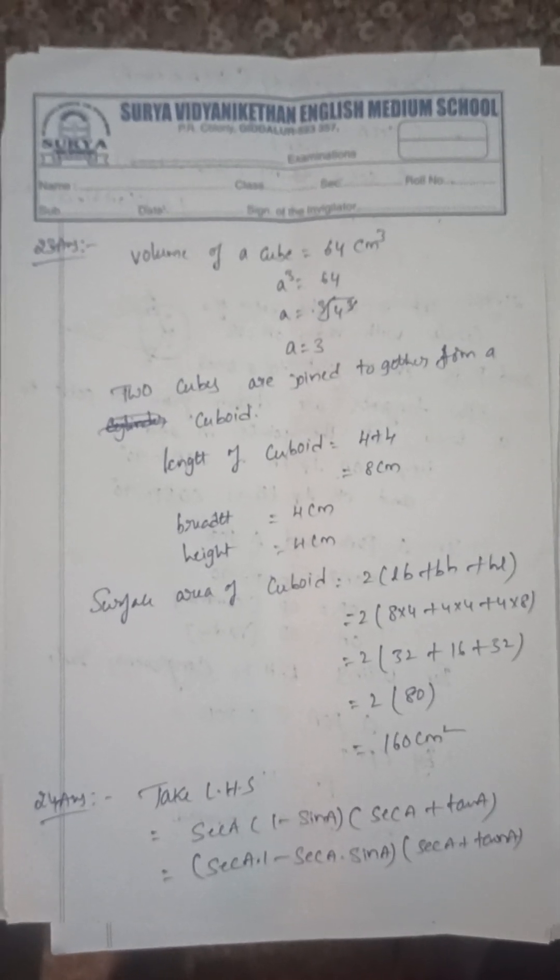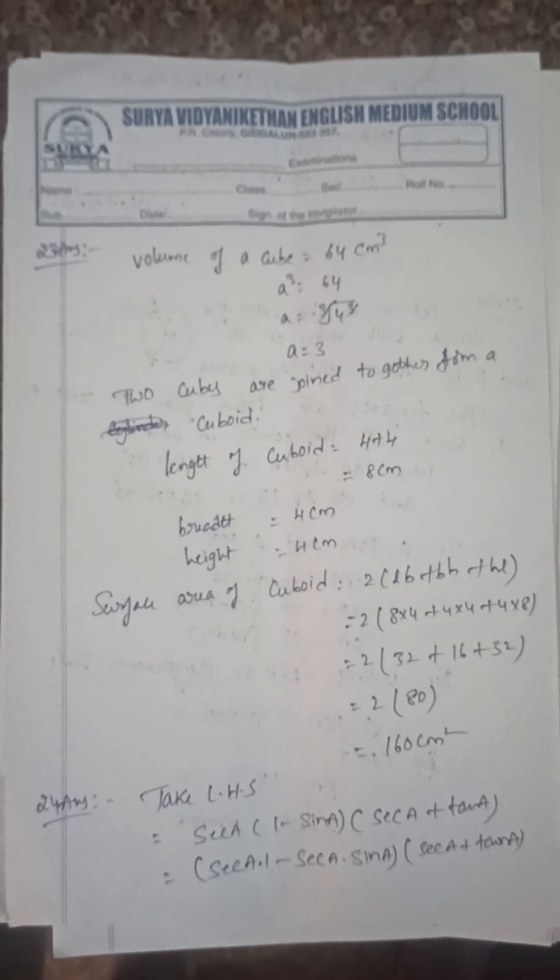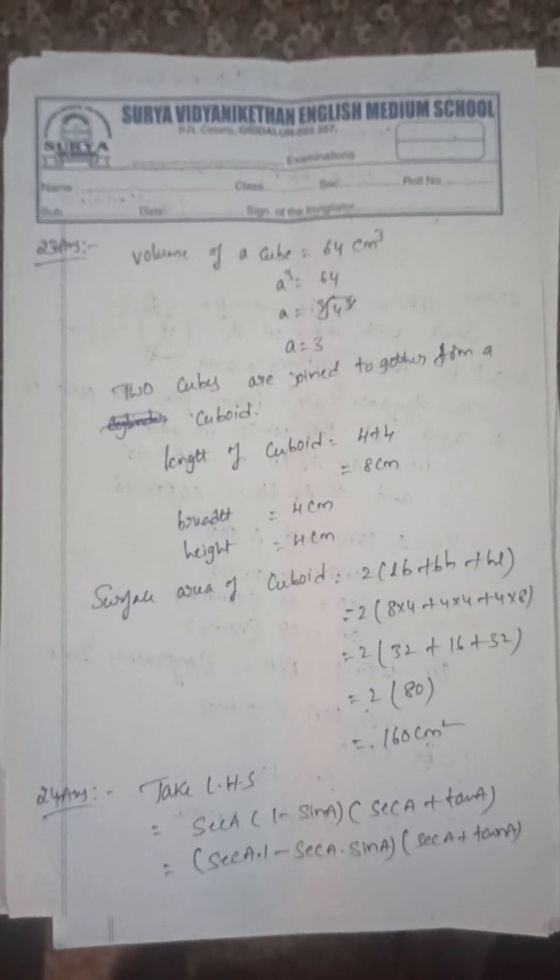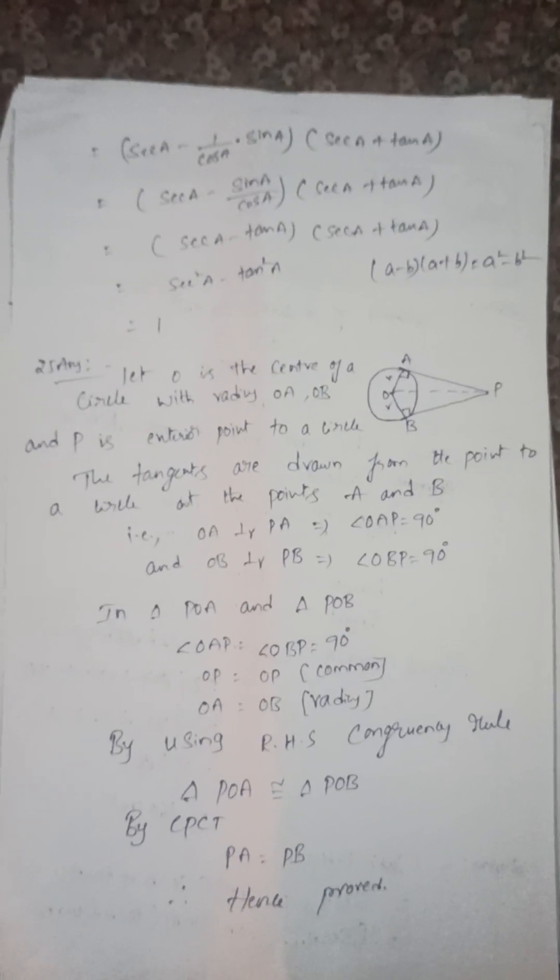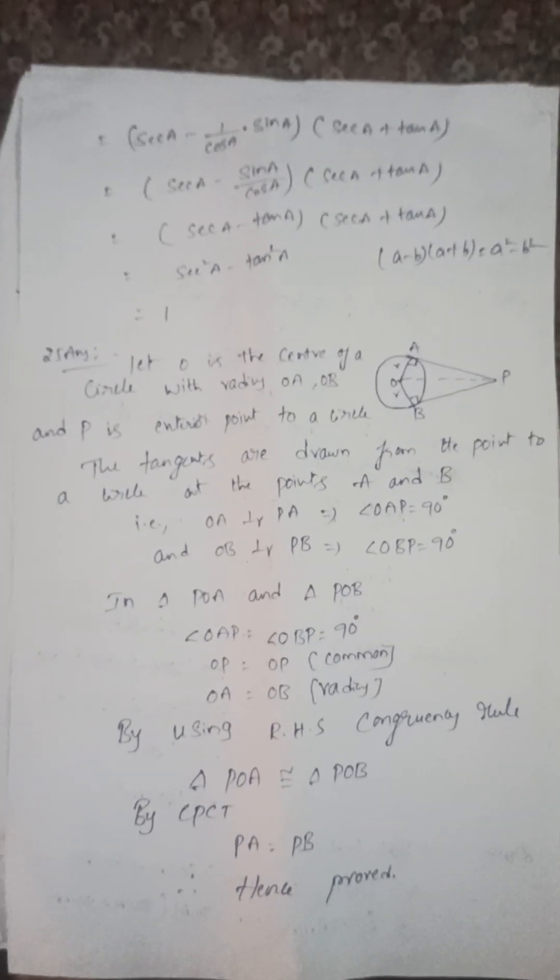Take LHS, so by using trigonometric identities: sec²A - tan²A = 1.